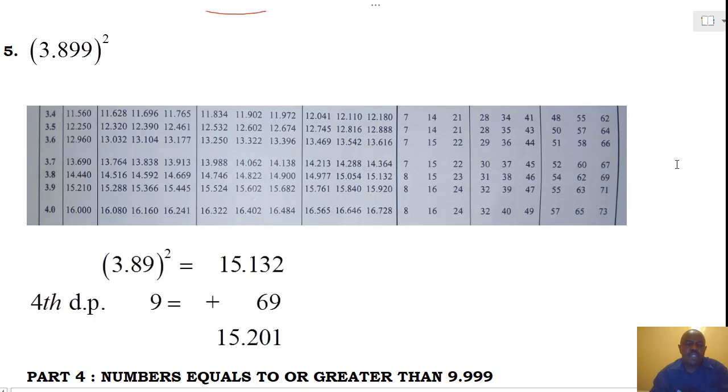Next, we determine the square of 3.899. We go to our table. From x, we locate the value 3.8. Inside the body, we go up to where we have a 9. And 3.8 and 9 corresponds to 15.132. That's our first step.